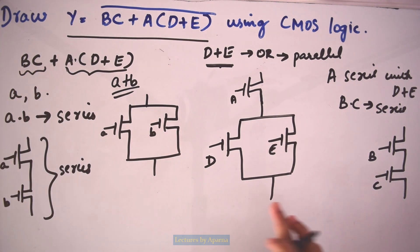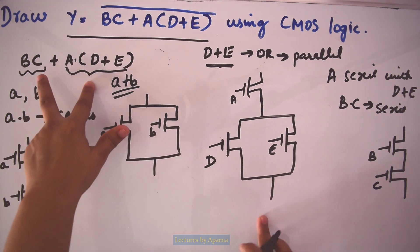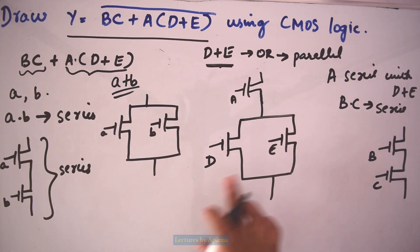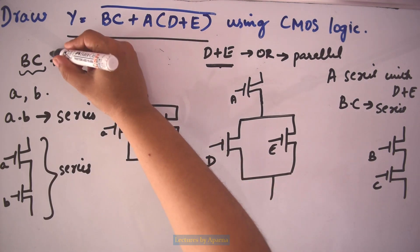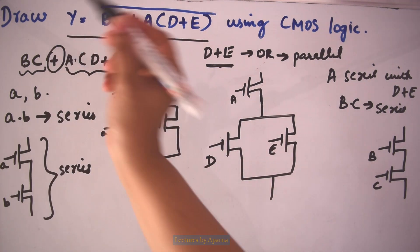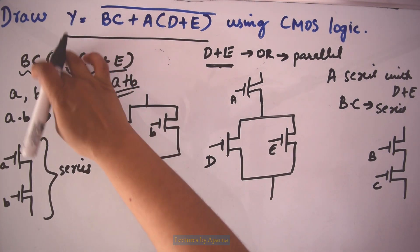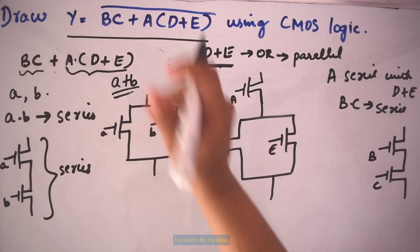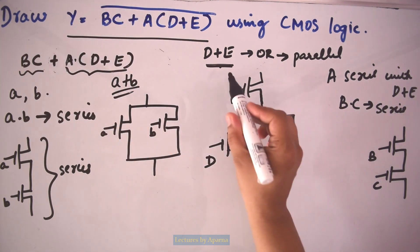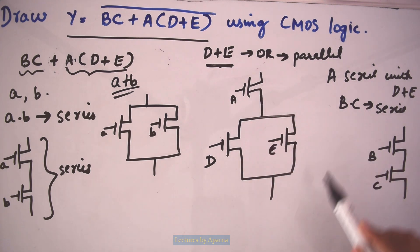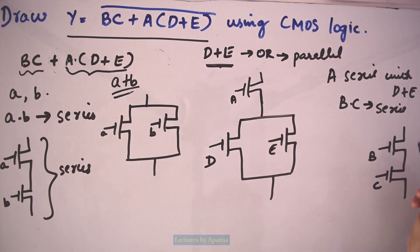Now I have to combine BC and A into (D plus E). Between them there is an OR operation, which means they will be in parallel. So the BC branch is in parallel with the A into (D plus E) branch.